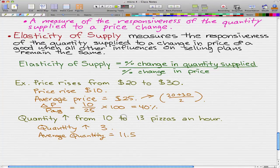Because we take 10 plus 13, that equals 23, and we divide it by 2 to give us 11.5. And then we're going to find the percentage change in quantity supplied.